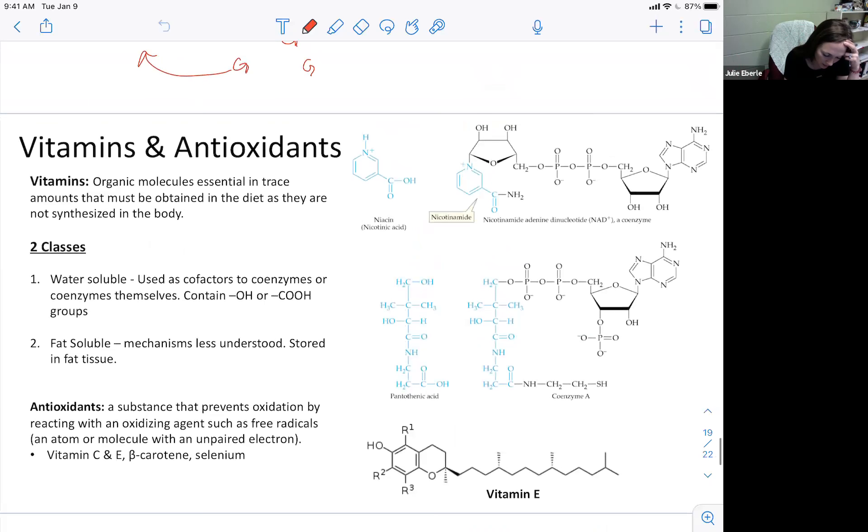Vitamins are organic molecules, meaning they're made up of carbon and oxygen and nitrogen - they're not metal ions or ionic compounds. They're essential in trace amounts and we have to obtain them from our diet. My daughter's obsessed right now with these little vitamin gummies. You have to be careful with kids' vitamins - they can be loaded with sugar, so always check the sugar content.